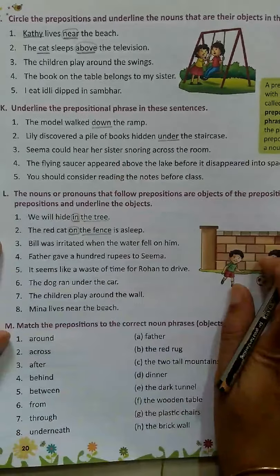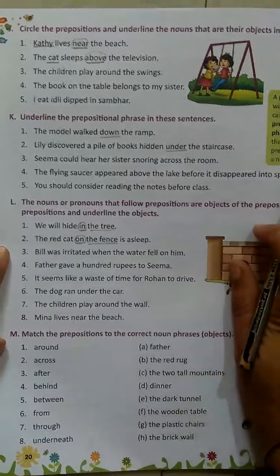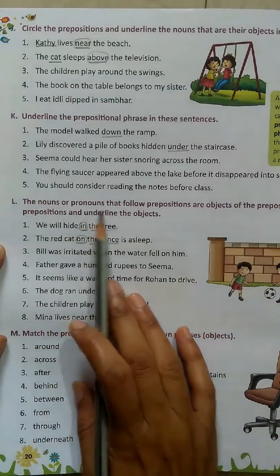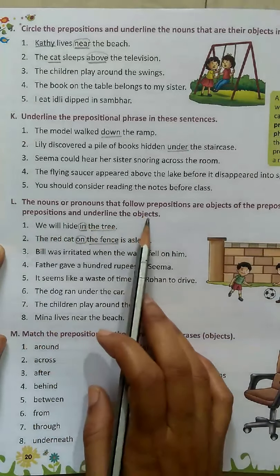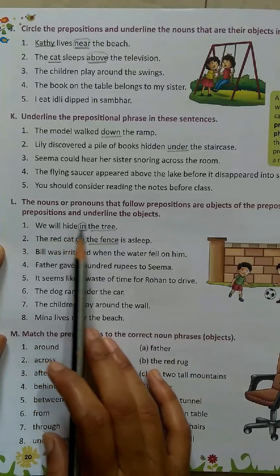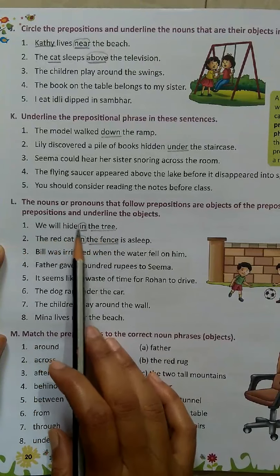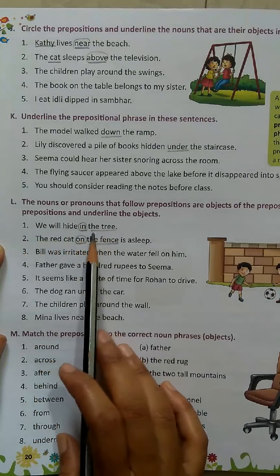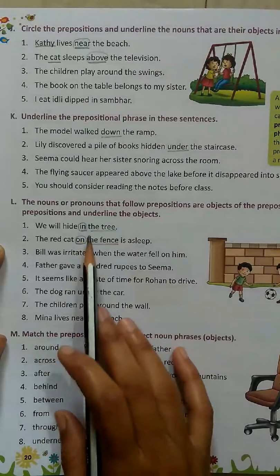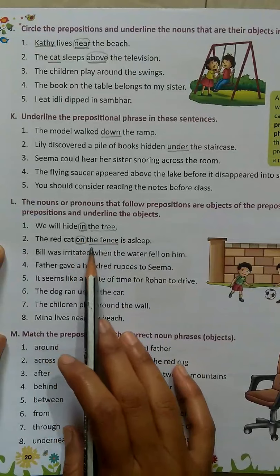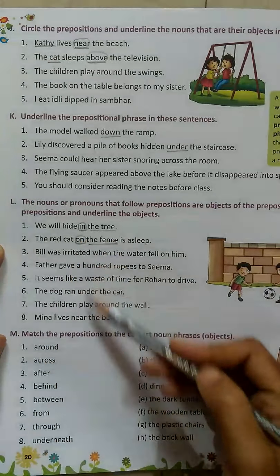Next question: the noun or pronoun that follows a preposition is the object of the preposition. Circle the preposition and underline the object. For example: 'We will hide in the tree.' Here, 'in' is the preposition and 'the tree' is the object. Common prepositions include: in, off, among, between, on, for, from, with. Here, 'in' — preposition, 'the tree' — object; 'on' — preposition, 'the fence' — object. The rest you will do.